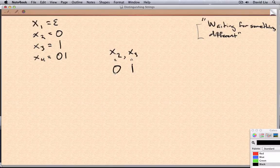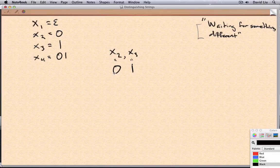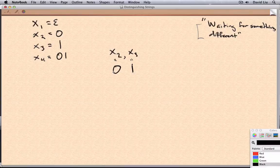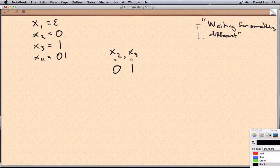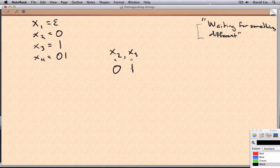This 0 over here, it needs to know whether the next character is a 1 or not, in order to decide whether it should be in L or not. But this 1, it doesn't care what the next character is. It already knows that it's not going to be in the language.